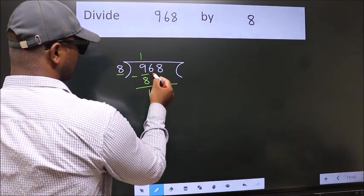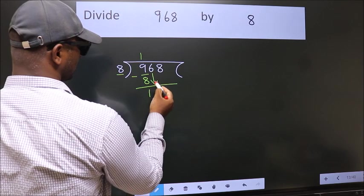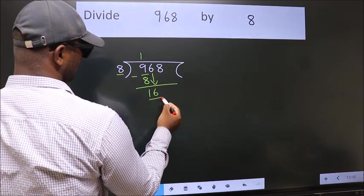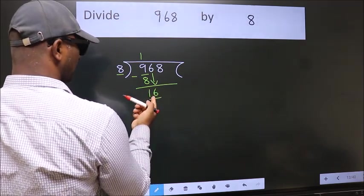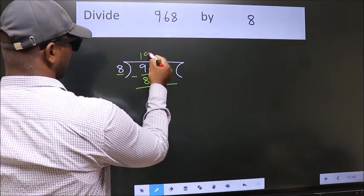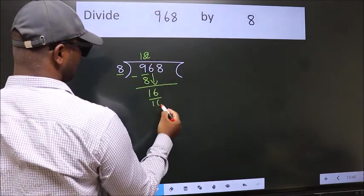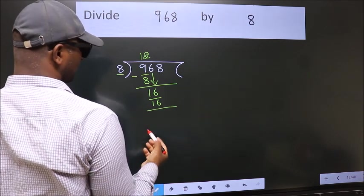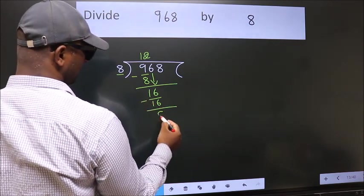After this, bring down the beside number. So 6 down. So 16. When do we get 16 in the 8 table? 8 twos, 16. Now we subtract. We get 0.